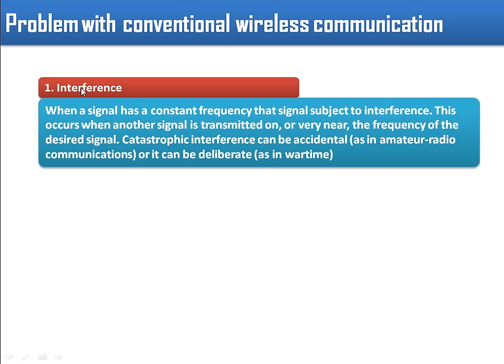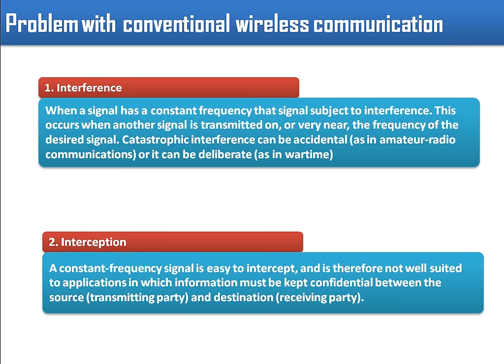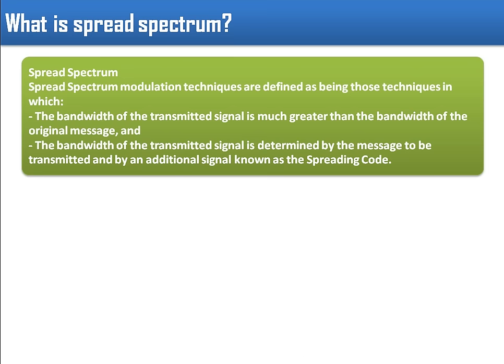The first problem with conventional wireless communication is interference. Interference occurs when another signal is also transmitted nearby on that frequency, and since we are using a constant frequency, that interference will persist for the entire duration of the communication. The second problem is interception, which is very easy because only a single constant frequency is in use. So if confidential information has to be sent, conventional wireless communication is not a good option.